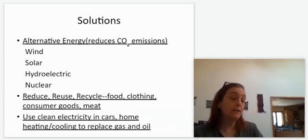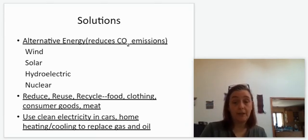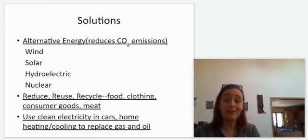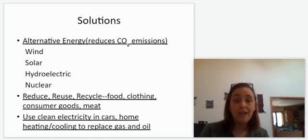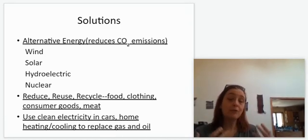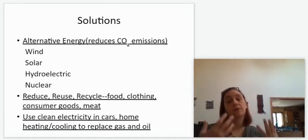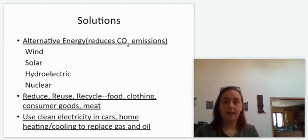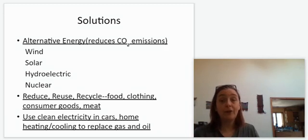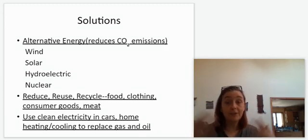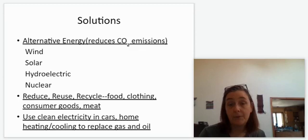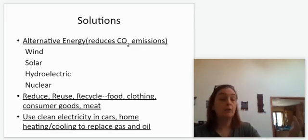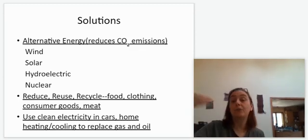Instead of driving cars that burn gas, you can drive cars that use electricity. If you've gotten rid of the coal and the gas, you're driving without emissions. You can do the same thing with heating your house. You can use something called heat pumps, and those use electricity to heat and cool your home. If you do that and you have gotten rid of coal, oil, and gas for making electricity, you now can heat your home without emissions.